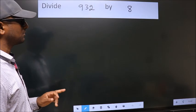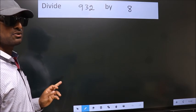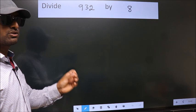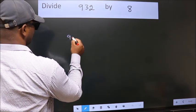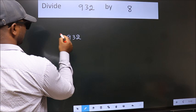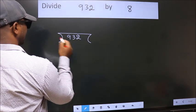Divide 932 by 8. To do this division, we should frame it in this way. 932 here, 8 here.